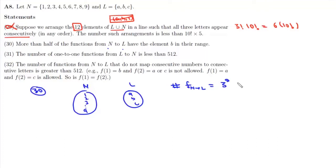So total number of functions will be 3^9, which is 81 × 81 × 3 = 19,683 functions.